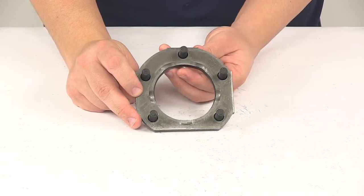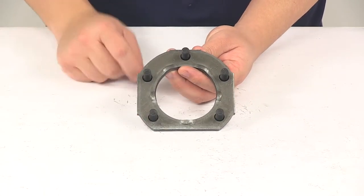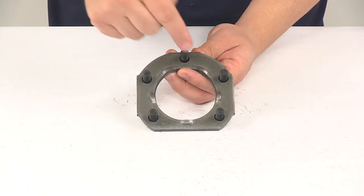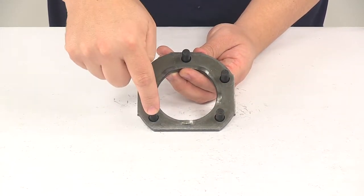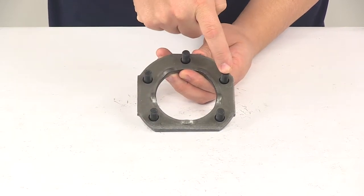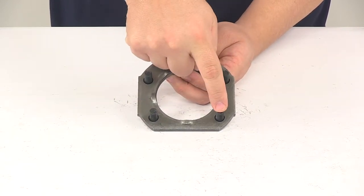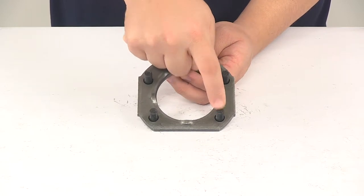The bolt pattern is five on three and seven eighths inches, so that means that we have five bolts, and then from the center of this one to the center of this one, as well as this one to this one, it's going to measure three and seven eighths of an inch. Center on center between these two, it's going to be three inches.